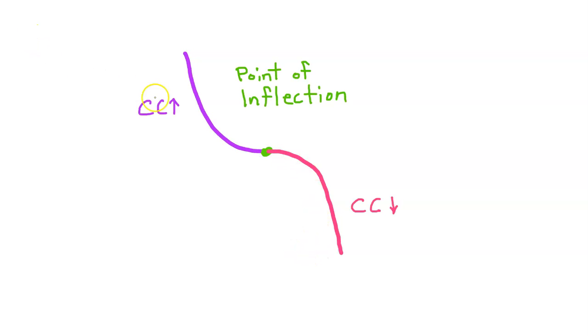Now this function is concave up everywhere, but imagine I took the red side and flipped it upside down. Now the function is concave up to a certain point, and then it becomes concave down. The point where the function goes from concave up to concave down is called the point of inflection, which I will abbreviate as POI.